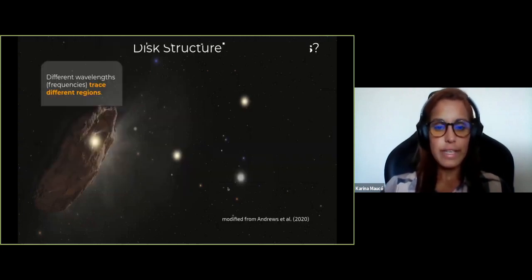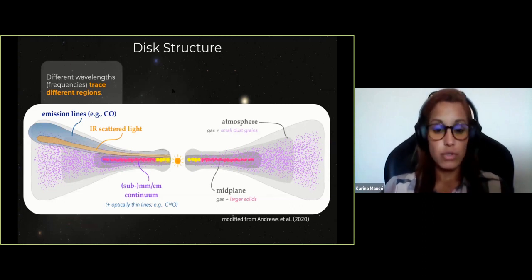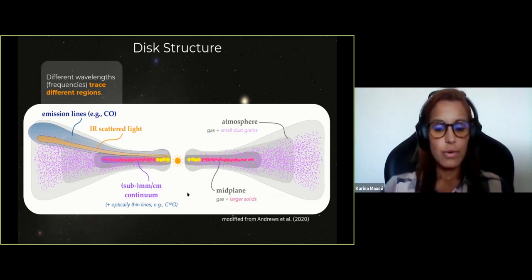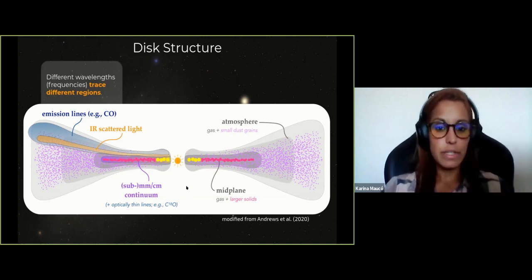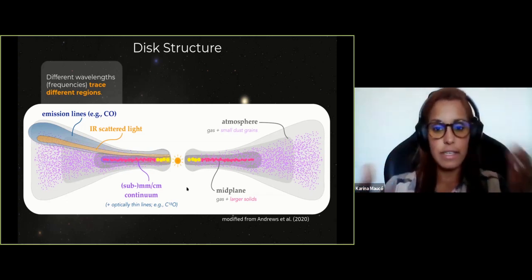What is a protoplanetary disk? Here I show a sketch from the Andrews review. These disks are composed mostly of gas, but also dust. Even though dust is just 1% of the mass, it dominates the opacity, so it's very important to study the dust component in protoplanetary disks.